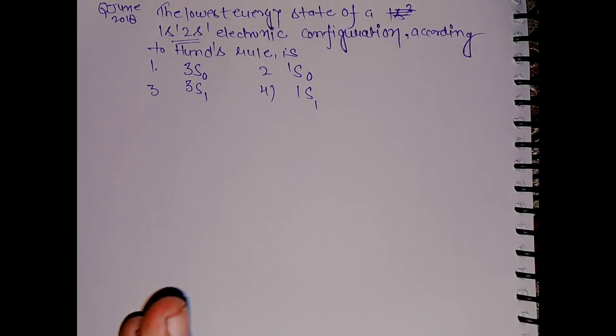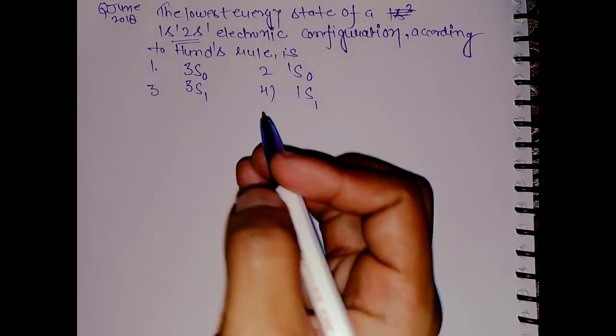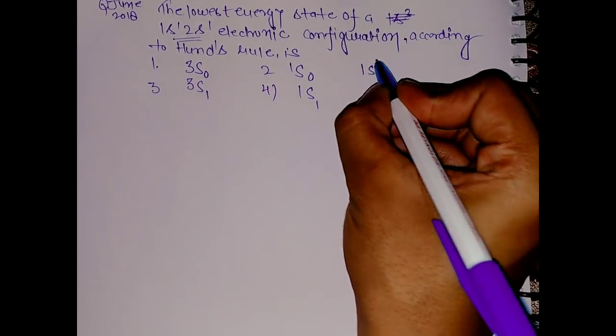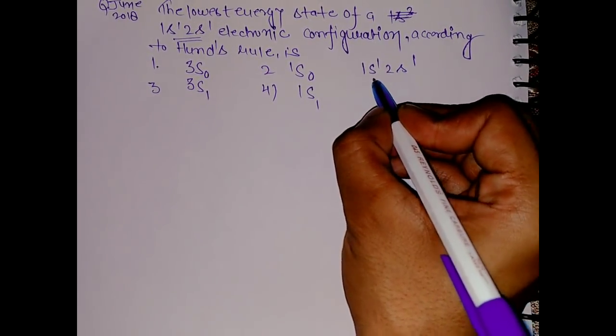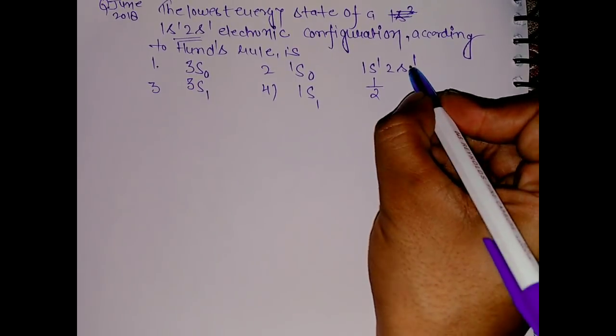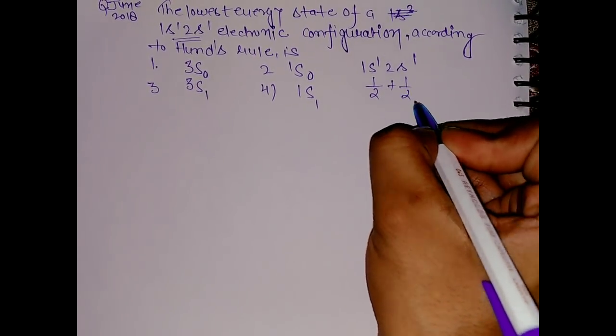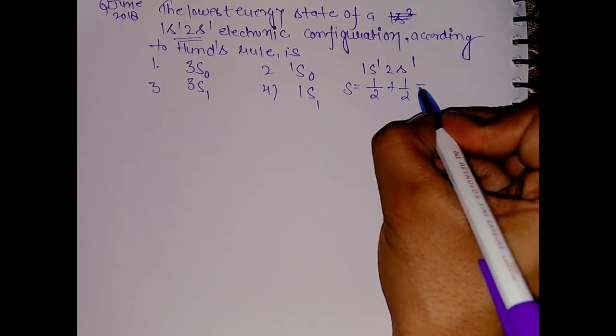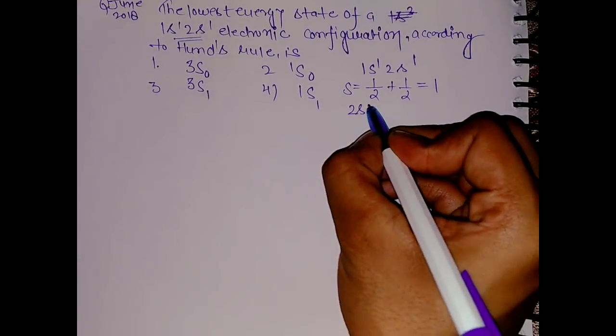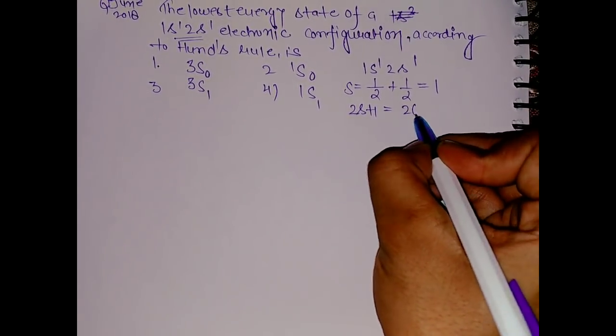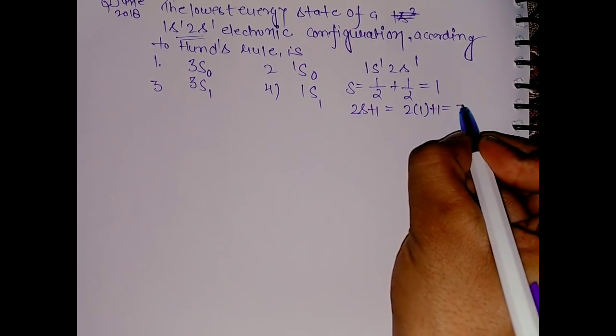This is 1s¹ 2s¹, basically one electron in each orbital. The spin will be half and half, so s equals 1. Multiplicity is 2s+1, which equals 2(1)+1 equals 3.